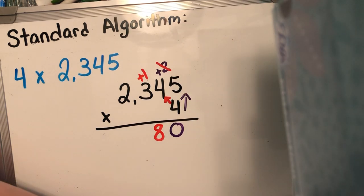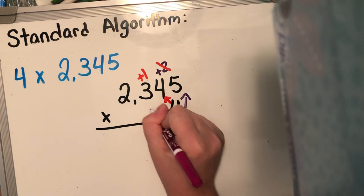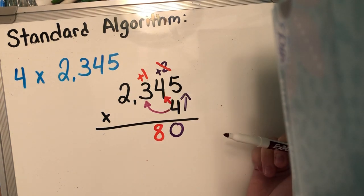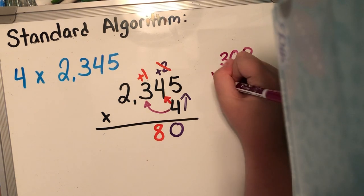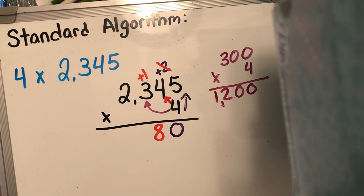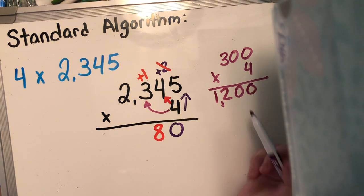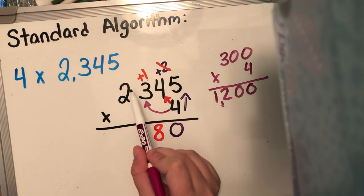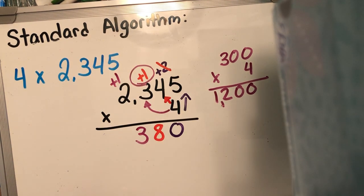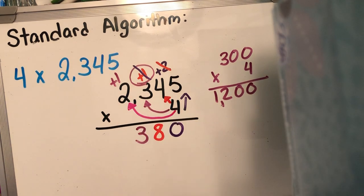Go ahead and cross off that two if you might get confused. Now I'm going to go across to the hundreds place. So four times 300 — I know that four times three is 12, and I'm in the hundreds place so I can tack on two zeros. But just to be safe, just do the math. In my mind I was correct that 300 times four is going to be 1,200. But I have this additional one that I need to add to it, so it's really gonna be 1,300. And I'm gonna go ahead and cross off that zero.